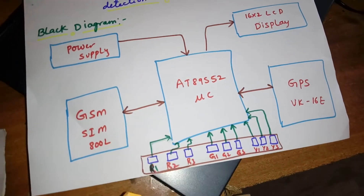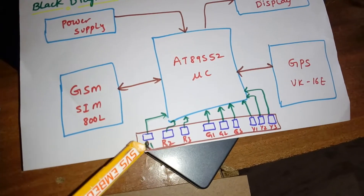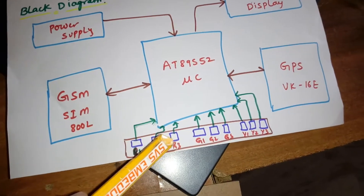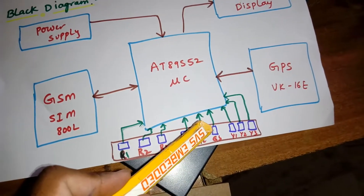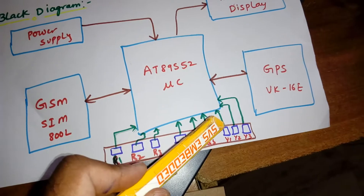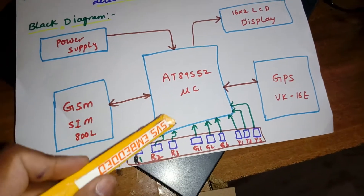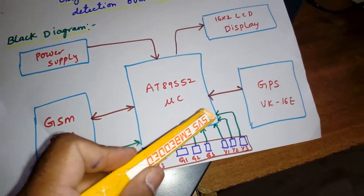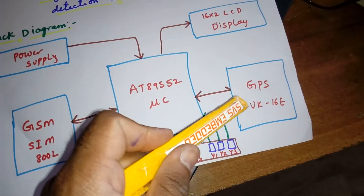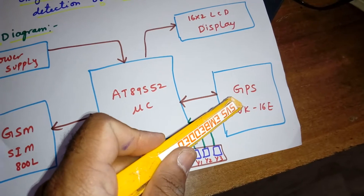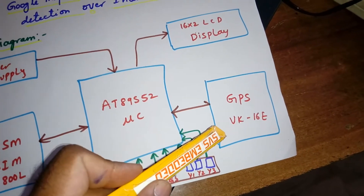We are using a total of nine keys: RL1, RL2, RL3 for the red cable; GL1, GL2, GL3 for the green cable; YL1, YL2, YL3 for the yellow cable. If there is any fault, we are capturing the latitude and longitude from the GPS module. Here we are using the VK16E GPS module.